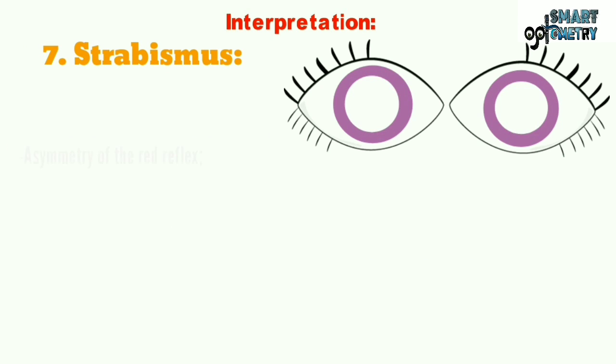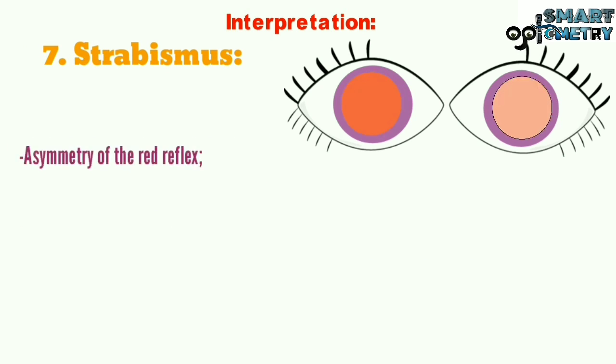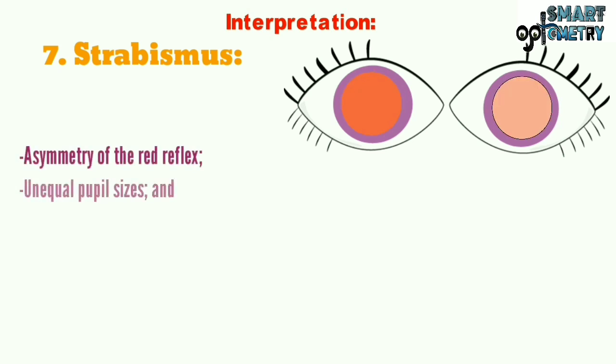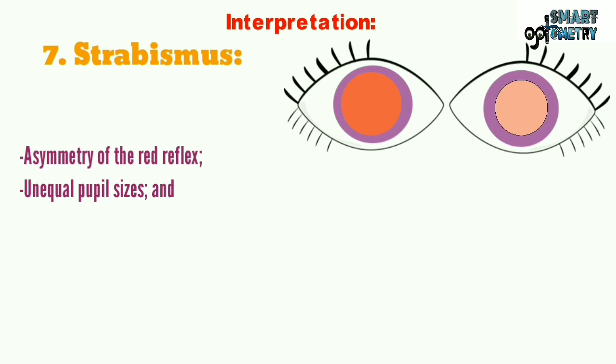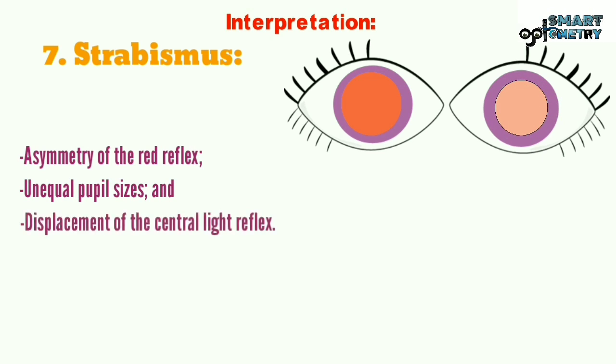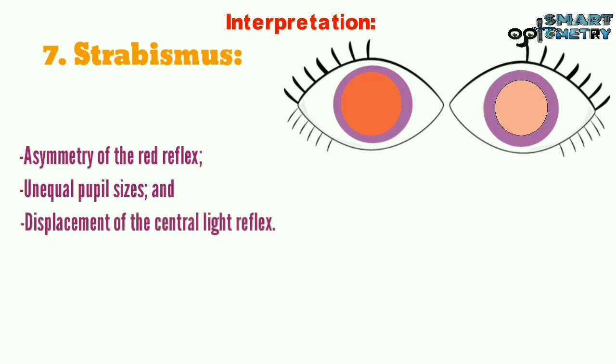7. Strabismus: Asymmetry of red reflex, unequal pupil size, and displacement of the central corneal light reflex.